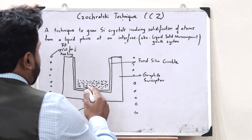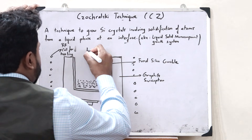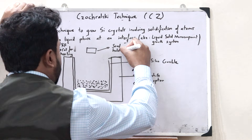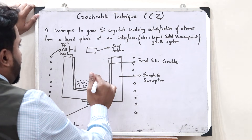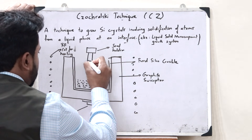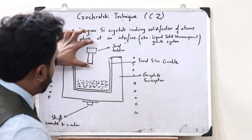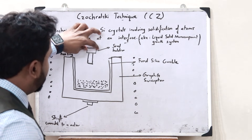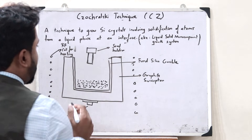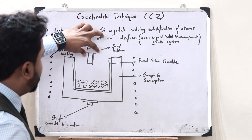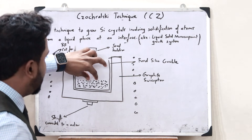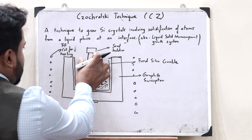Once the polycrystalline silicon starts melting, we use another component known as a seed holder. With the help of this seed holder, we attach it to a particular seed crystal — some suitable crystal is placed here as a seed. What we do is dip this entire setup, that is the seed held by the seed holder, into this particular molten silicon.